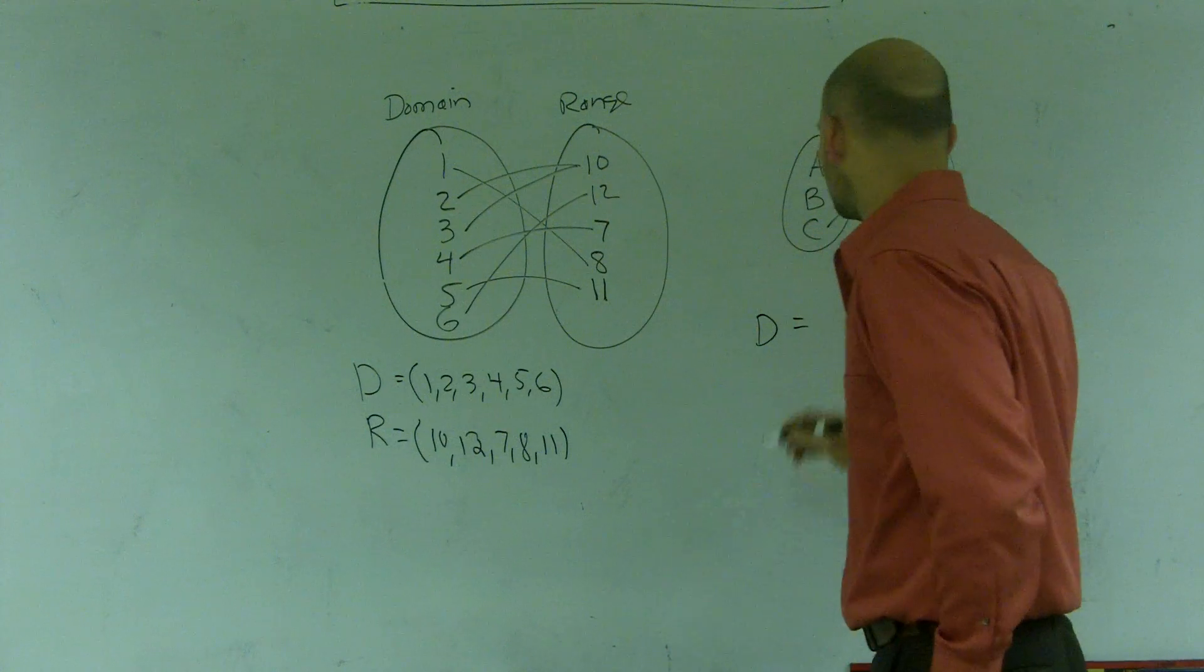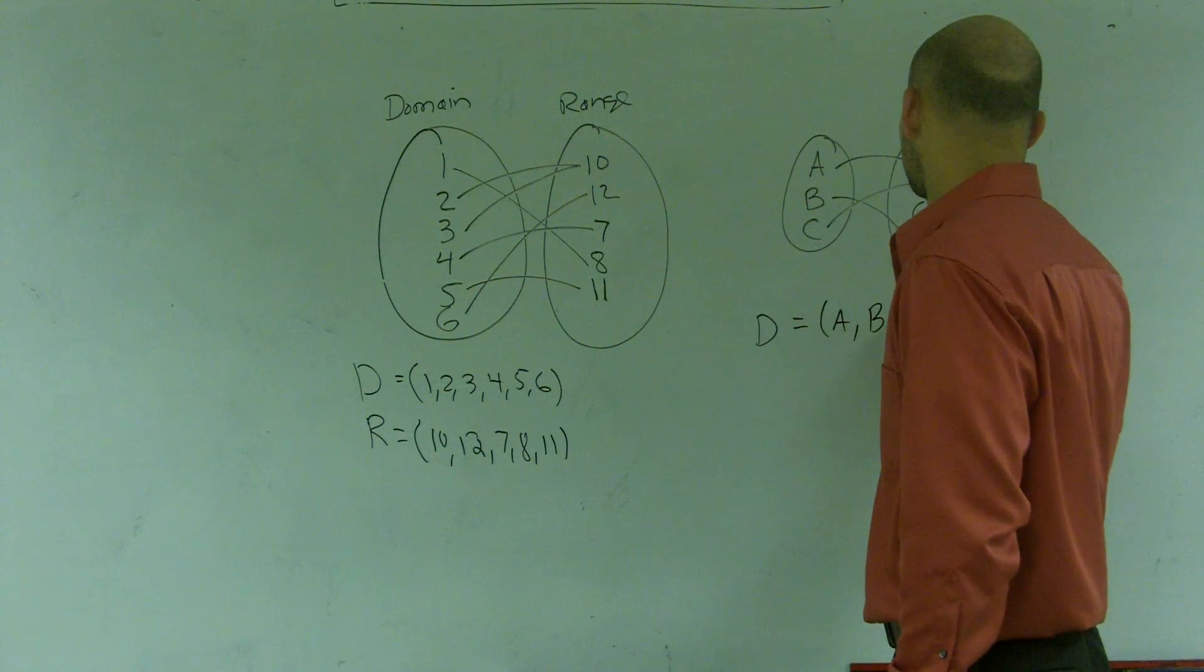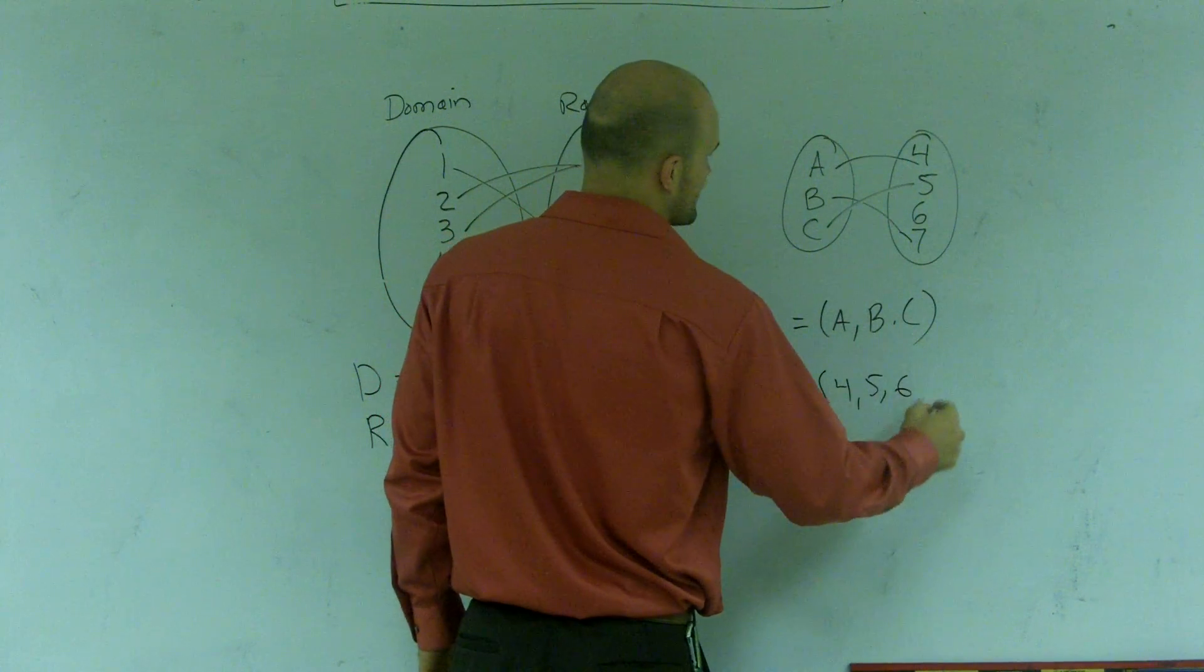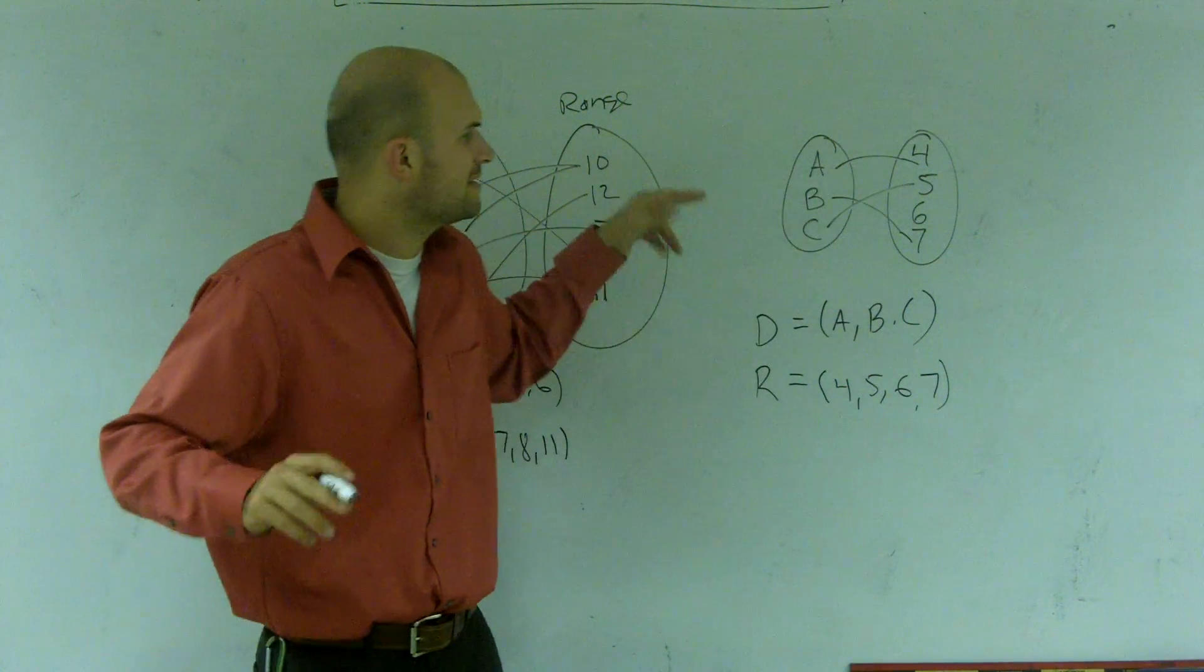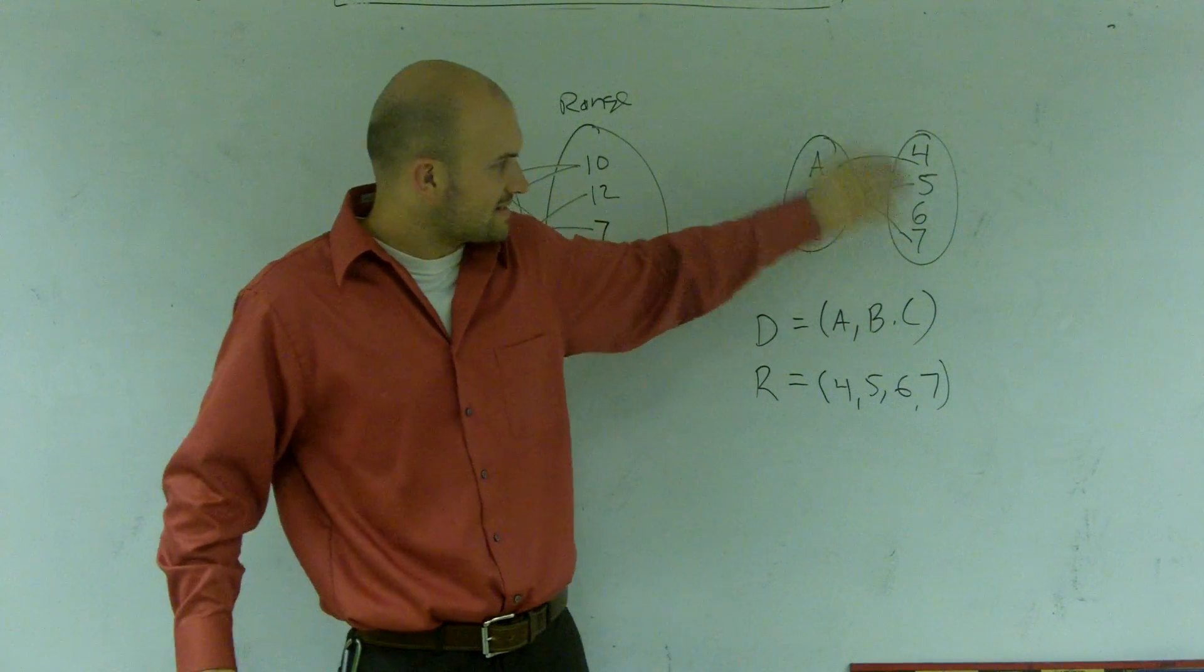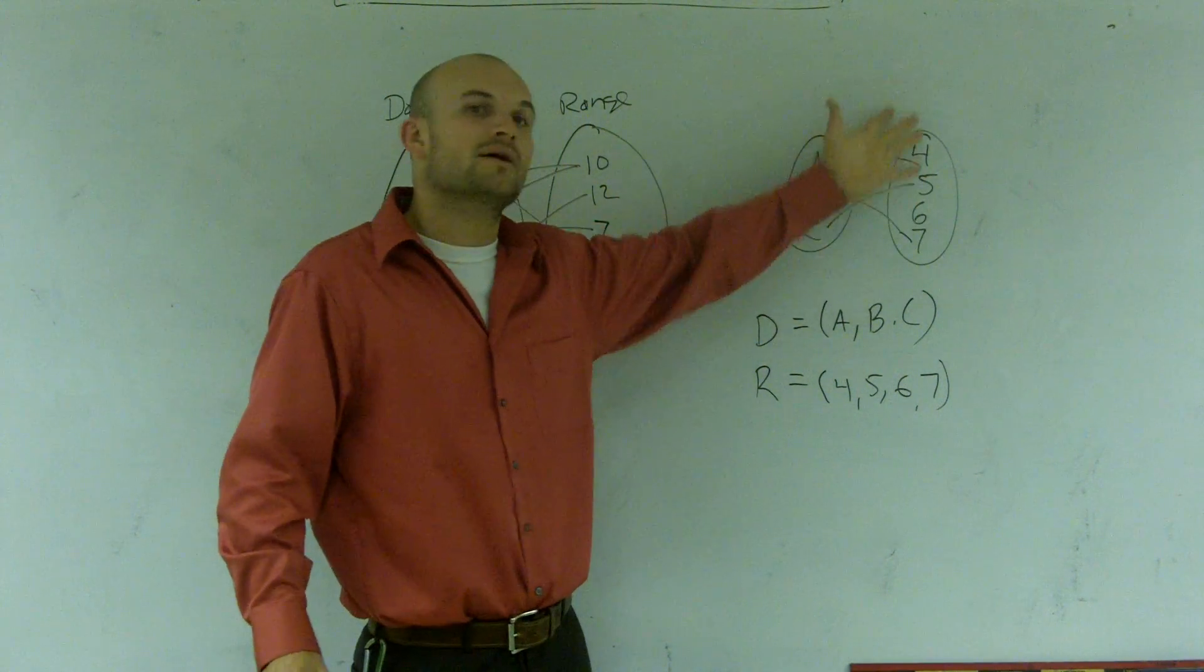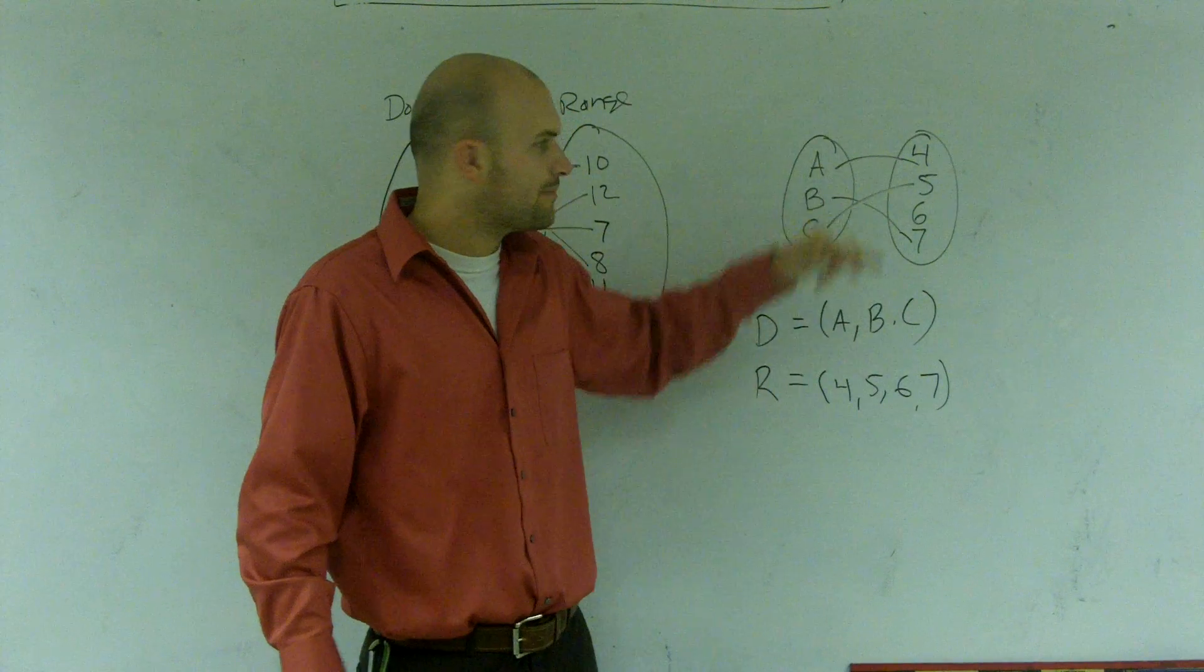And a lot of students miss out on the 6 because they say 1, 2, 3, 4, 5, and a lot of students miss out on the 6 because they say, hey, it's not mapped from anything in the domain. However, that 6 is still in my range circle. So therefore, it's still going to be part of my range. I know it's not represented by any mapping term, but it's still part of my range. So this number 6 still is going to be a part of my range. So that's how you find a domain and a range when mapping.